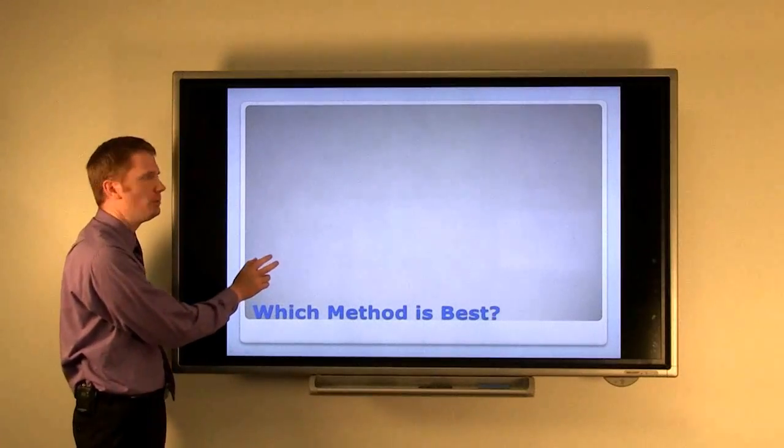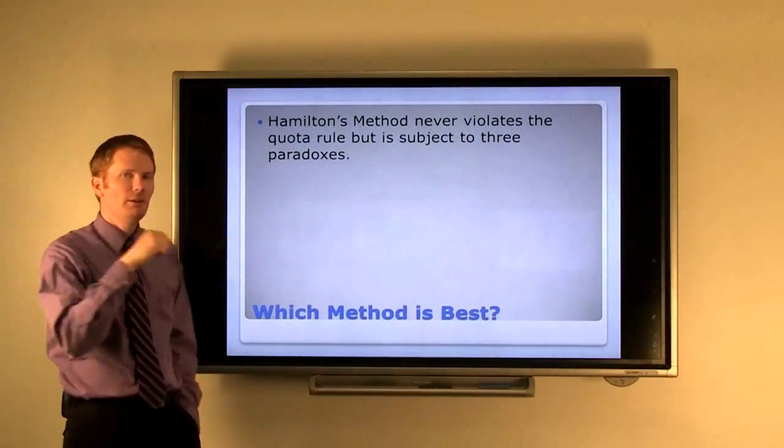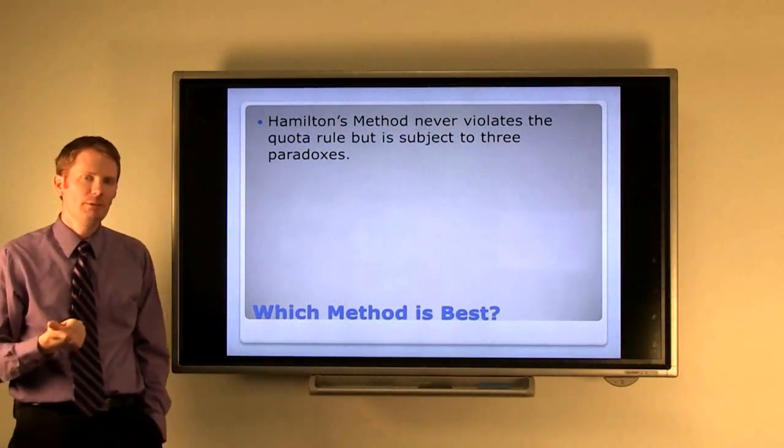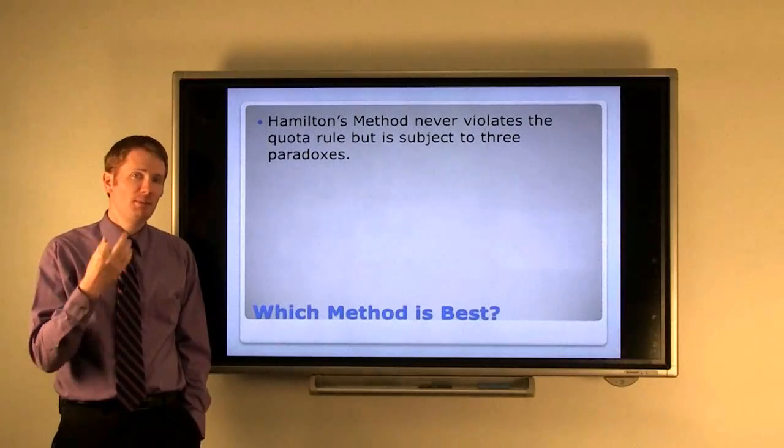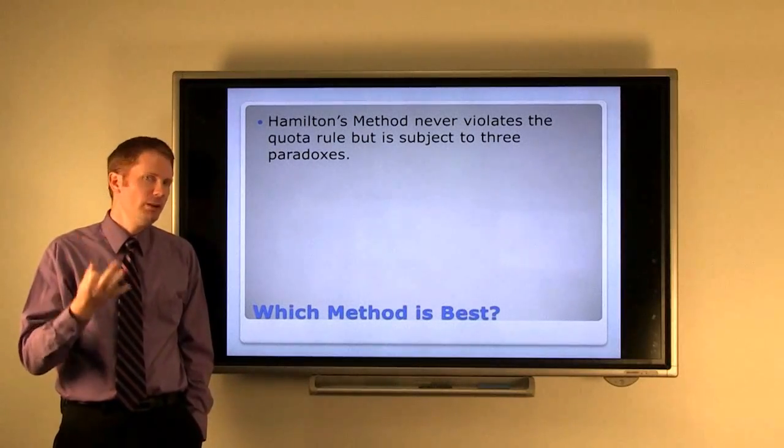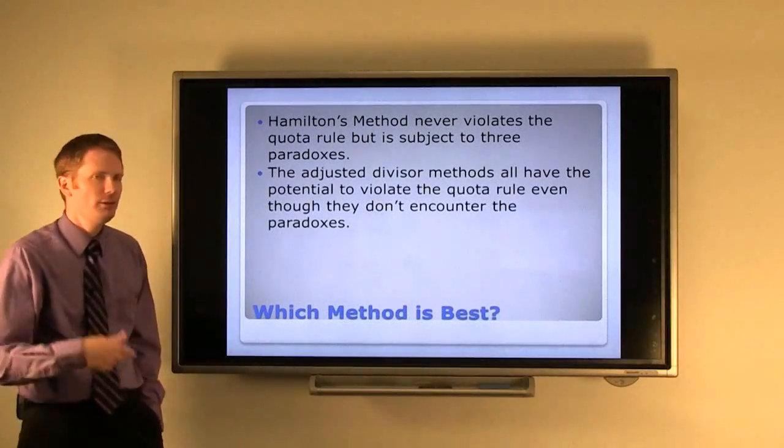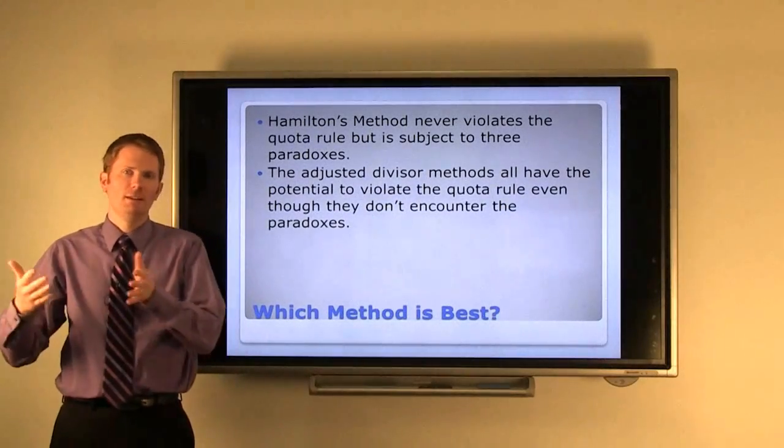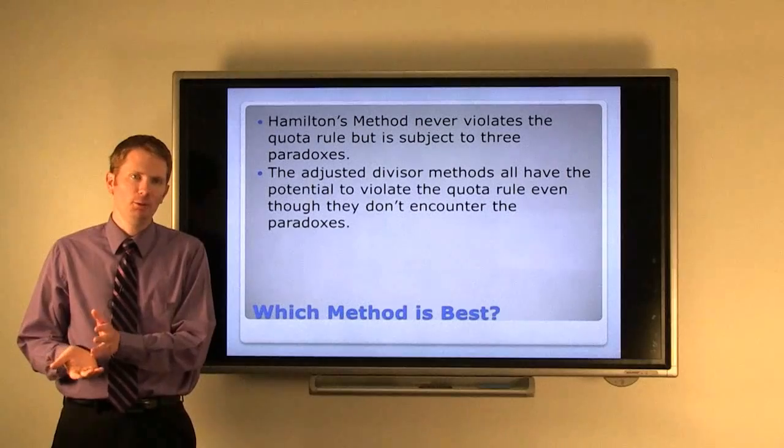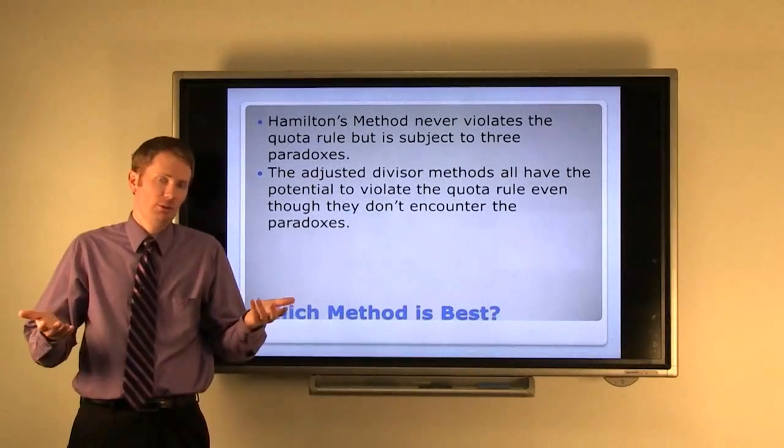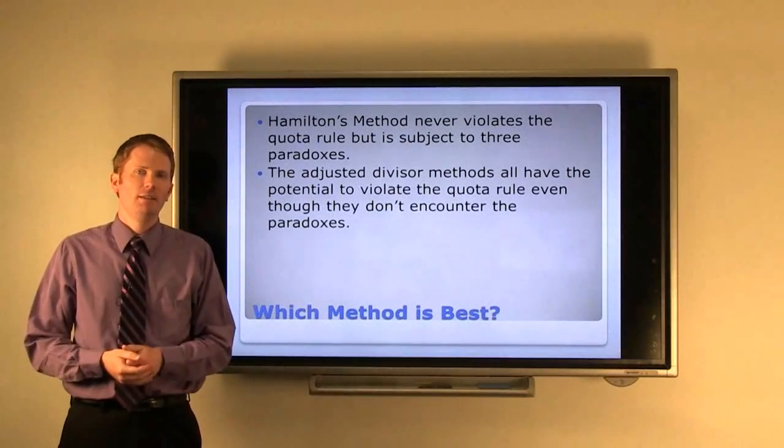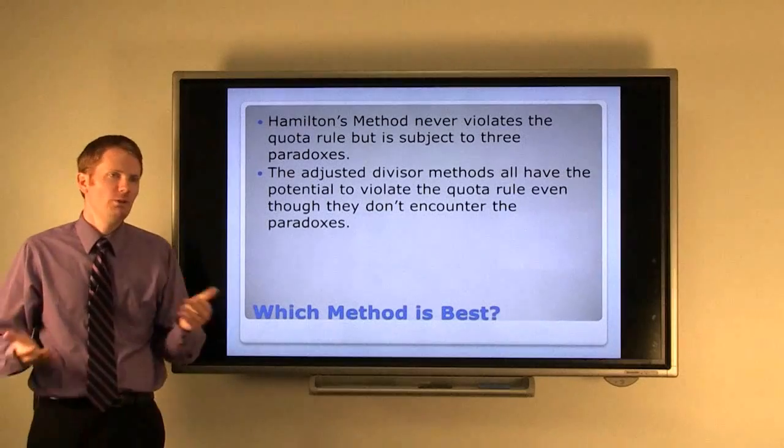Which method is best? We know that Hamilton's method never violates the quota rule, but it's been subject to three weird paradoxes in its enactment. On the other hand, all the adjusted divisor methods have the potential to violate the quota rule, but they don't encounter the paradoxes, which can be shown mathematically. So which do you want to choose?